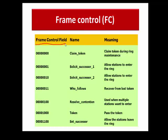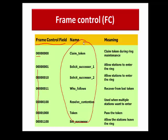In the frame control field — one octet — the first two bits indicate the frame type: '00' means control frame, '01' means data frame, with other combinations for management frames. One such control frame is the token itself. To find your next successor, control frames called Solicit Successor are used — there are two types: Solicit Successor 1 and Solicit Successor 2. There is also a Claim Token frame used during bus initialization.